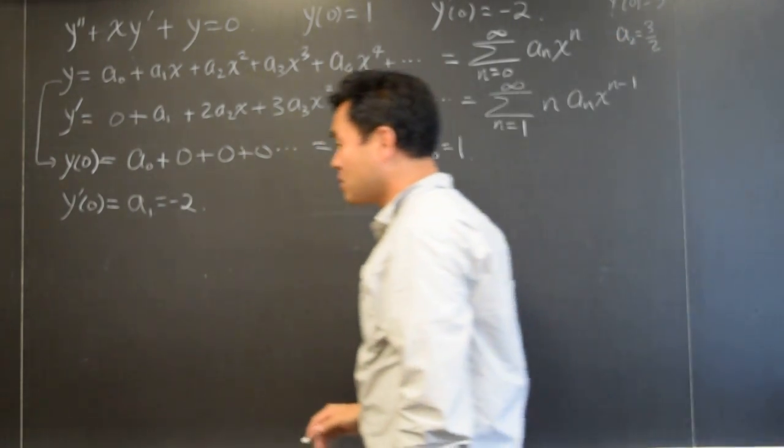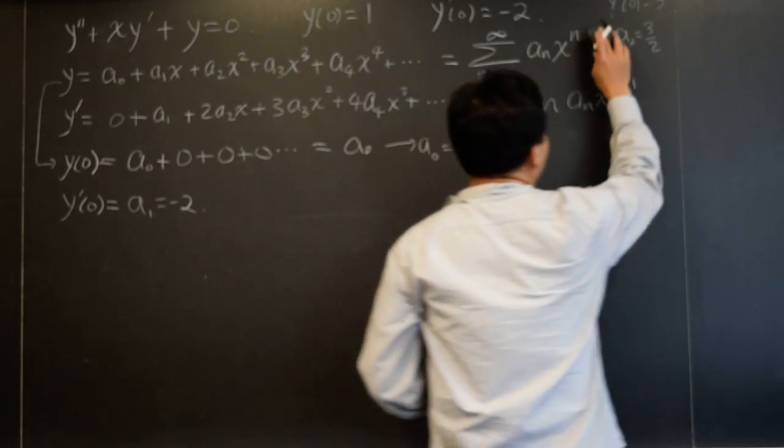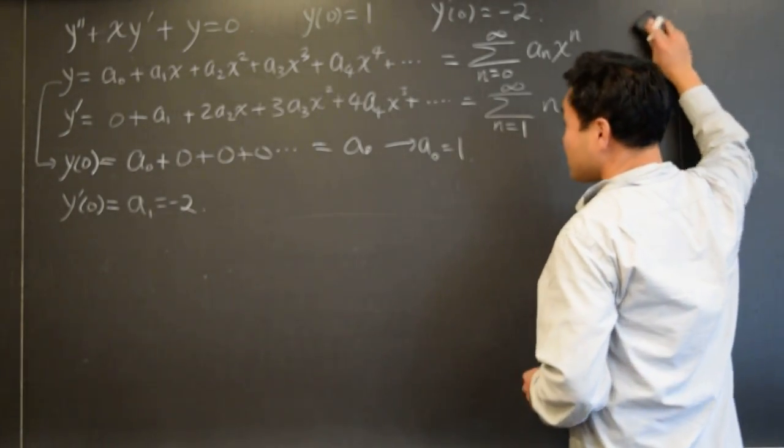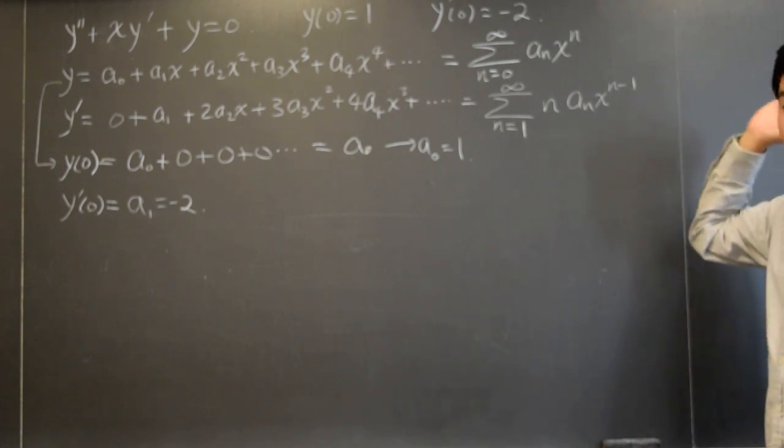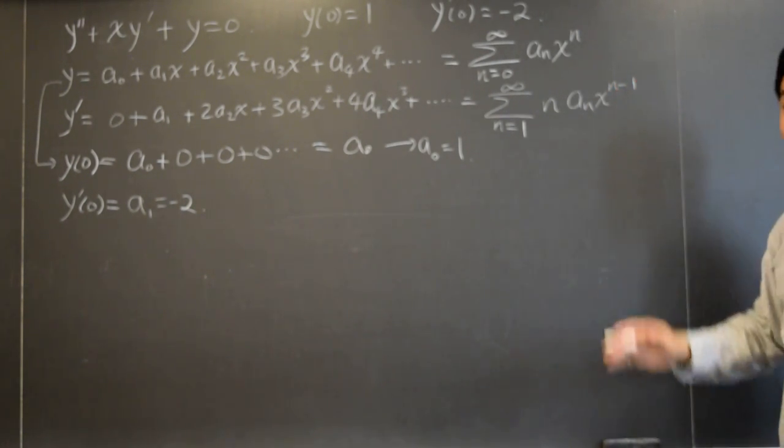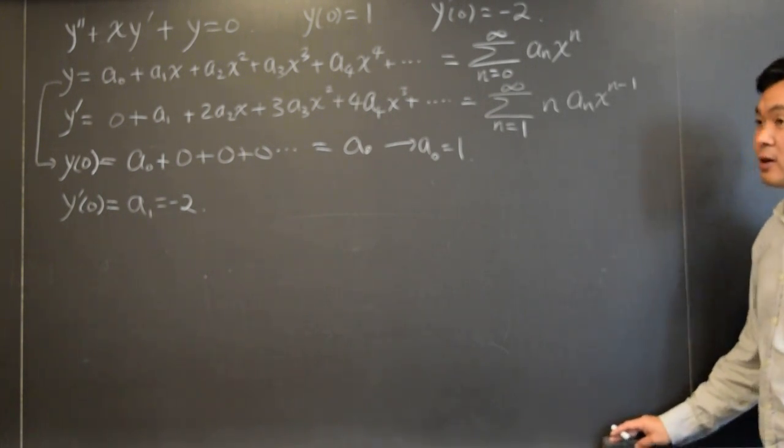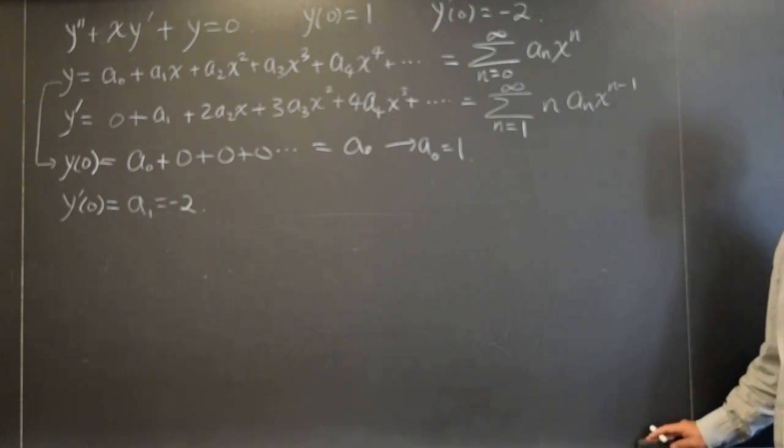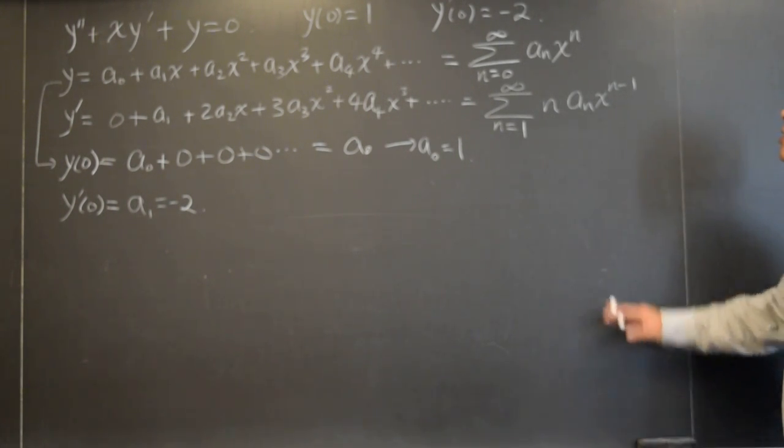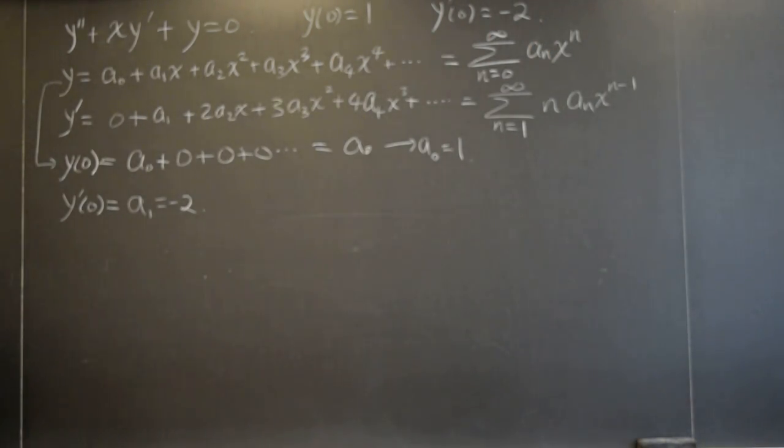So you would end up with, if this is true, then this would be what you get, okay? So it's slightly more complicated than just having a zero equal one, and a one is negative two, and all that. Alright. So, but if we didn't have those initial parameters, how do we? If you didn't have those initial parameters, then a zero and a one would be arbitrary.